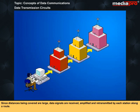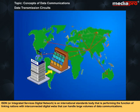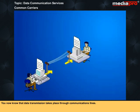Since distances being covered are large, data signals are received, amplified, and retransmitted by each station along a route. ISDN, or Integrated Services Digital Network, is an international standards body performing the function of linking nations with interconnected digital webs that can handle large volumes of data communications.